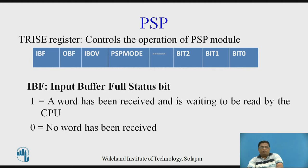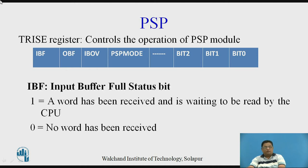This is the bit format of the TRISE register, which is used to control the operation of the parallel slave port. The lower three bits — bit 2, bit 1, bit 0 — are used to decide the direction of the three lower bits of Port E. The MSB bit is called IBF, the input buffer full status bit. This IBF bit is set whenever a word has been received and is waiting to be read by the PIC controller. IBF equal to 0 means no word has been received.